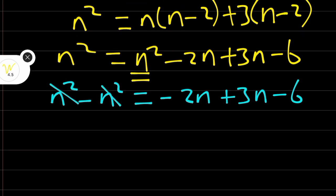This and this we cancel. We are left with 0 here is equal to minus 2n plus 3n, which is actually n minus 6.